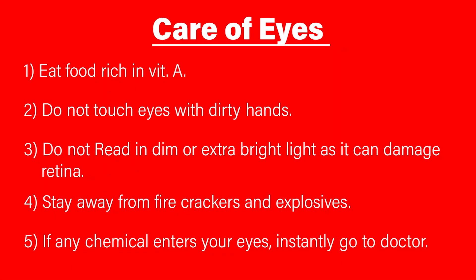Basically, there are 5 to 6 things that you should follow. The first one is: don't touch your eyes with dirty hands, because it can cause any kind of infection and can harm your vision. Secondly, eat green leafy vegetables and a diet rich in vitamin A, which is very good for your eyes' health — present in carrot, fish, green leafy vegetables, etc. Third, do not read in dim light or in excess bright light, because it can damage your retina. Whenever any chemical enters your eyes, instantly go to a doctor. And last but not least, stay away from firecrackers and any kind of explosives, because chemicals present in them can harm your vision and eyes completely.